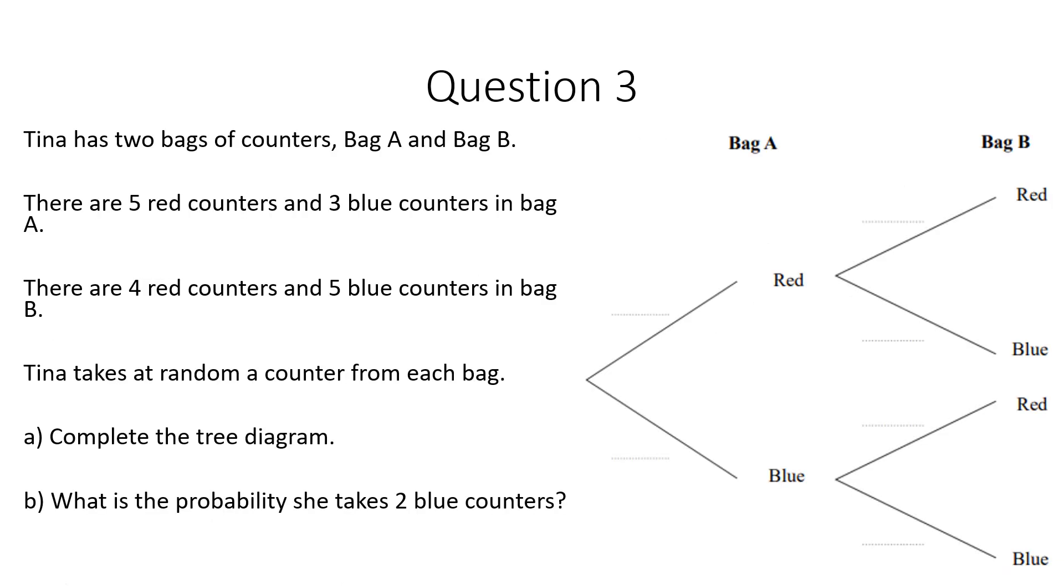Okay here's another example then. There's a little bit of a slightly different one this time. Because this time we're going to be using fractions. So in this example Tina's got two bags of counters. Bag A and bag B. She's got five red and three blue in bag A. And then four red and five blue in bag B. And she's taking a counter at random from each bag.